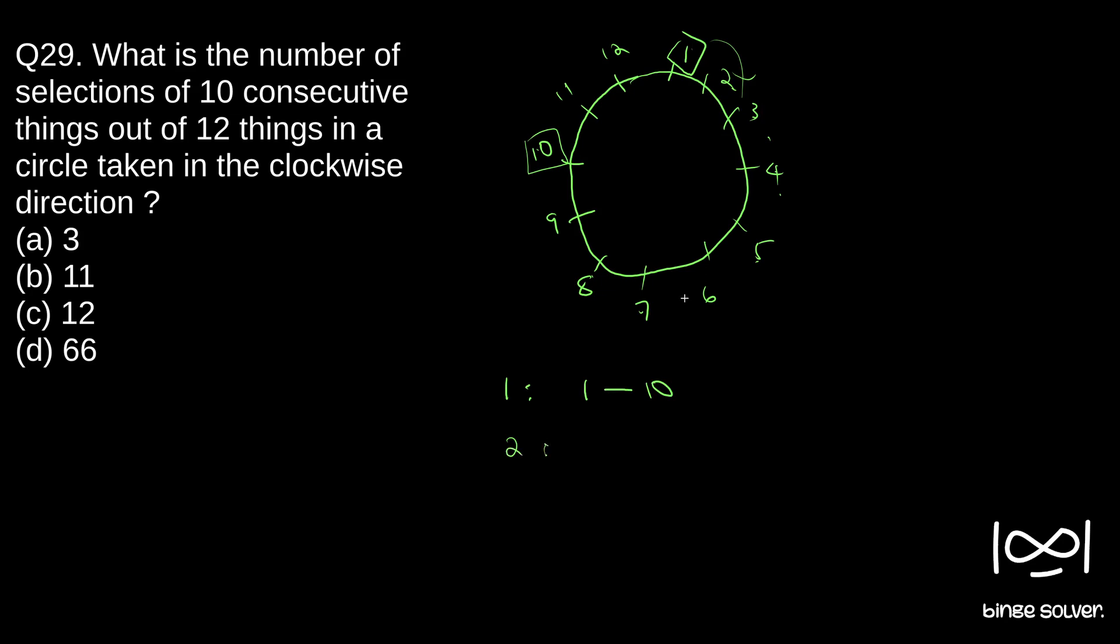So second choice we can make will be changing the person from person with we started. So if we start with 2, then we can make the selection 2 to 11. 2 to 11 is another possibility. Then we can choose our third case will be 3 to 12.